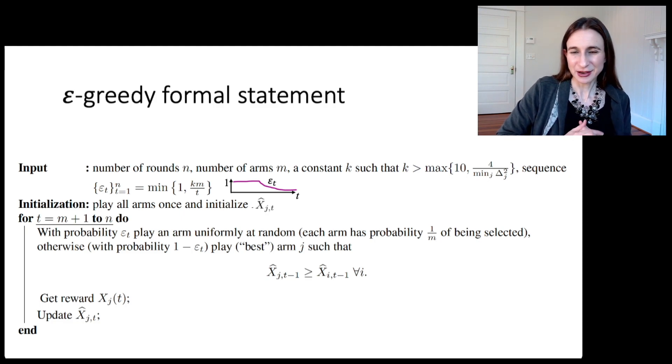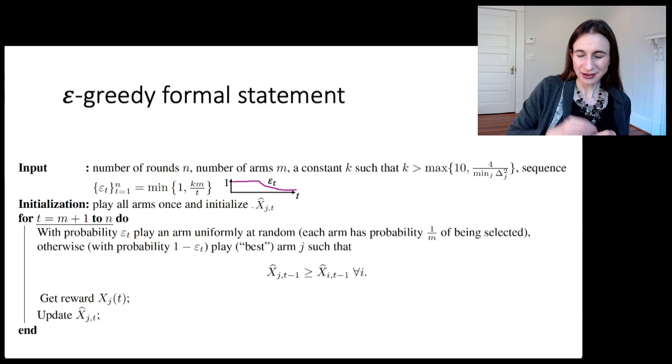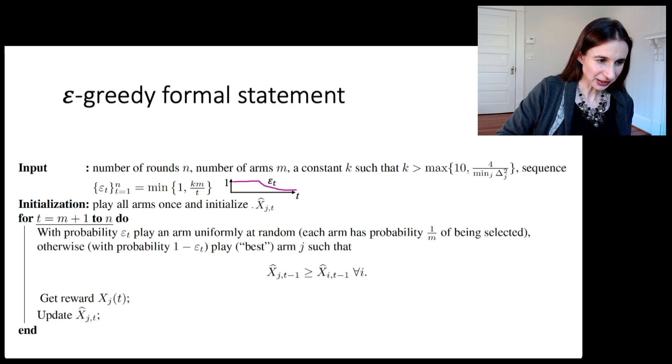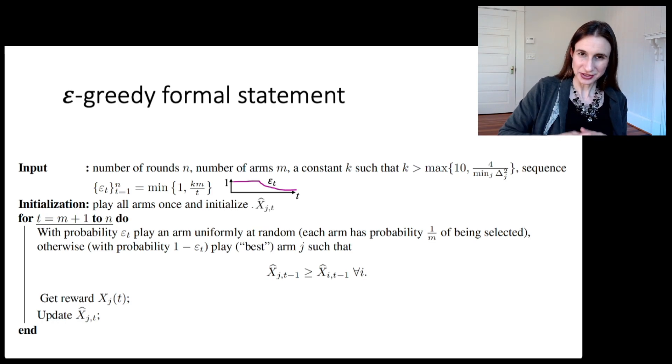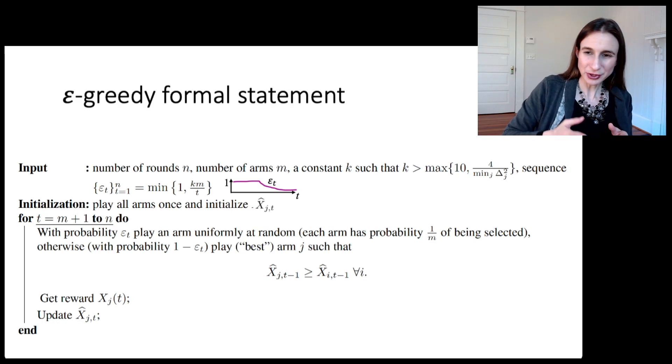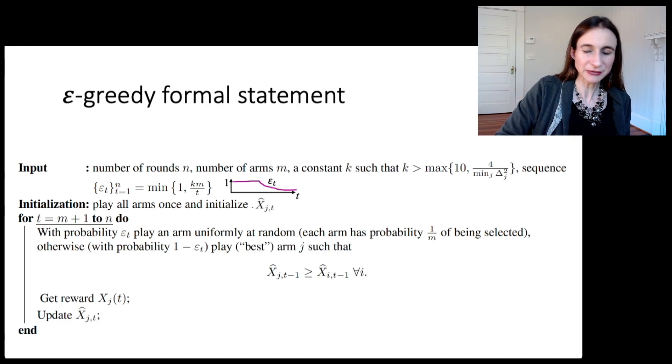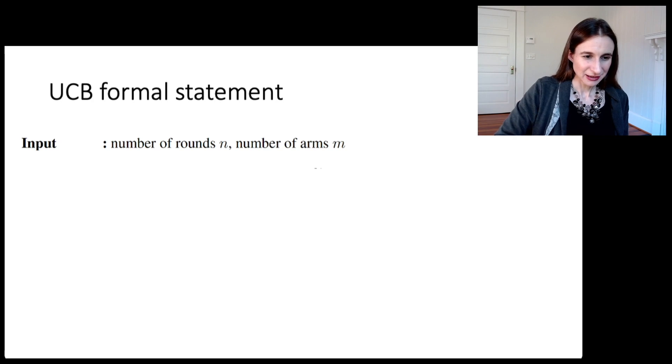So arm J there has a mean reward that is estimated to be larger than any of the other mean rewards for all of the other arms. So then you actually see what happened. You get your reward X_J,T and then you update your estimated mean for that arm.